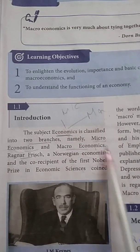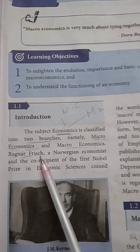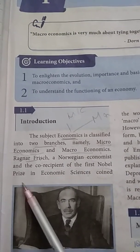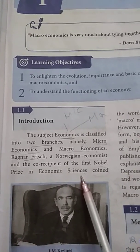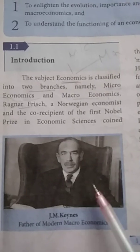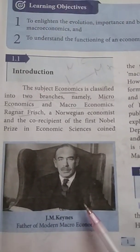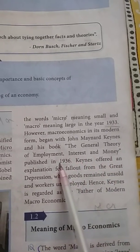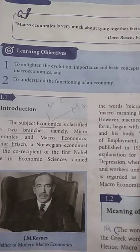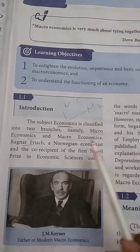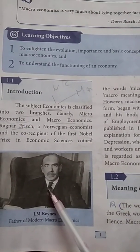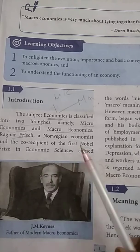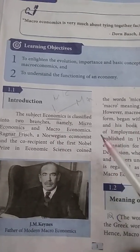Micro means small and macro means large. This was coined by Ragnar Frisch, a Norwegian economist and Nobel Prize winner — he was the first Nobel Prize winner in economic science. JM Keynes is the father of modern macroeconomics. He published 'The General Theory of Employment, Interest and Money' in the year 1936. So in this introduction, key one-word answers include who coined the word microeconomics (Ragnar Frisch), who is the father of modern macroeconomics, and who published that book.